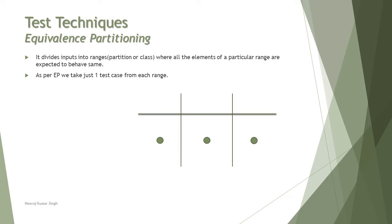So if you test one value, you can be sure that all elements of that particular range will respond the same. To make sure that other ranges produce different responses, we do test other ranges as well, but we take only one value from each range. Let's look at what we have at the advanced level — the foundation remains the same, with something additional topped up for the advanced test analyst.